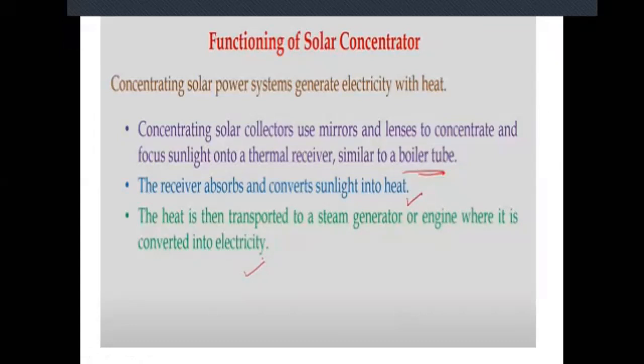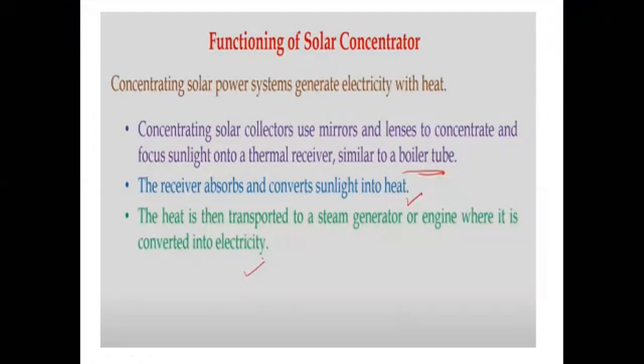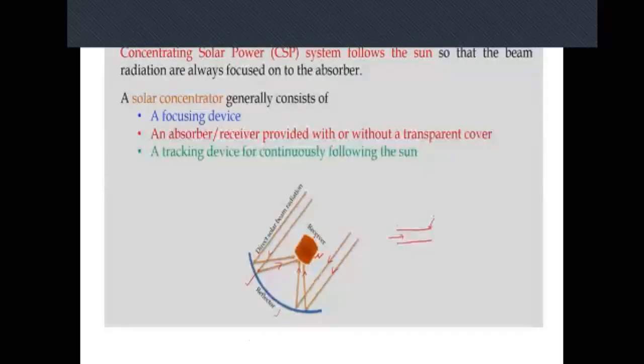Concentrating solar power systems generate electricity as well as heat. Concentrating solar collectors use mirrors and lenses to concentrate and focus sunlight onto a thermal receiver. The thermal receiver — similar to a boiler tube — absorbs and converts sunlight into heat. The heat is then transported to a steam generator or engine where it is converted into electricity.